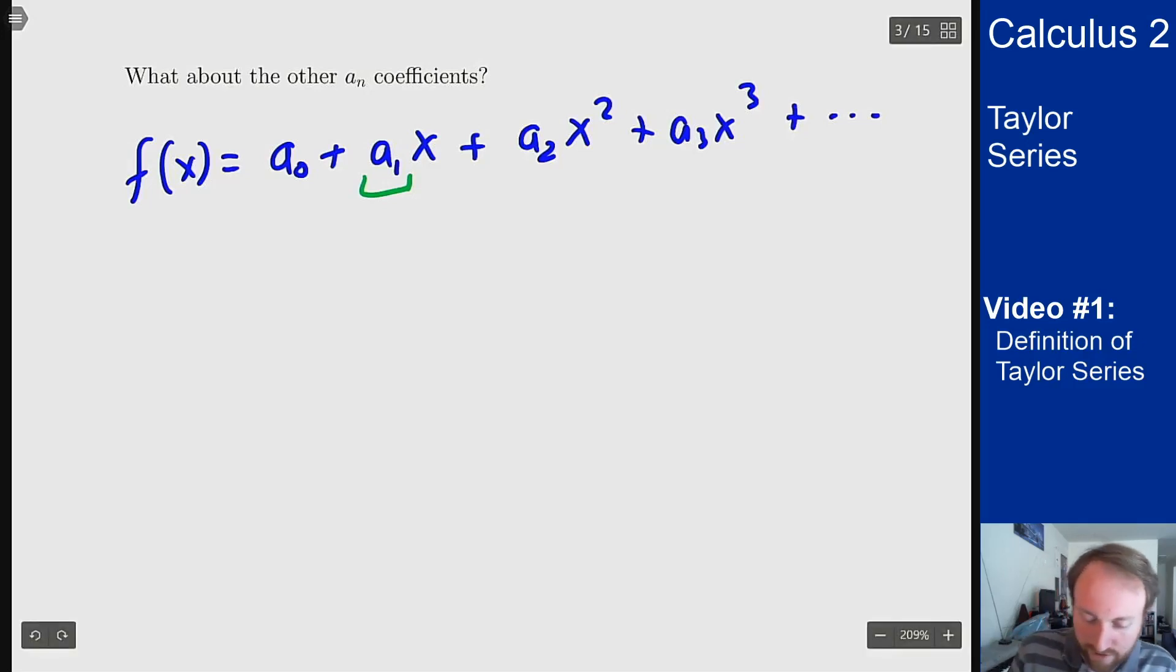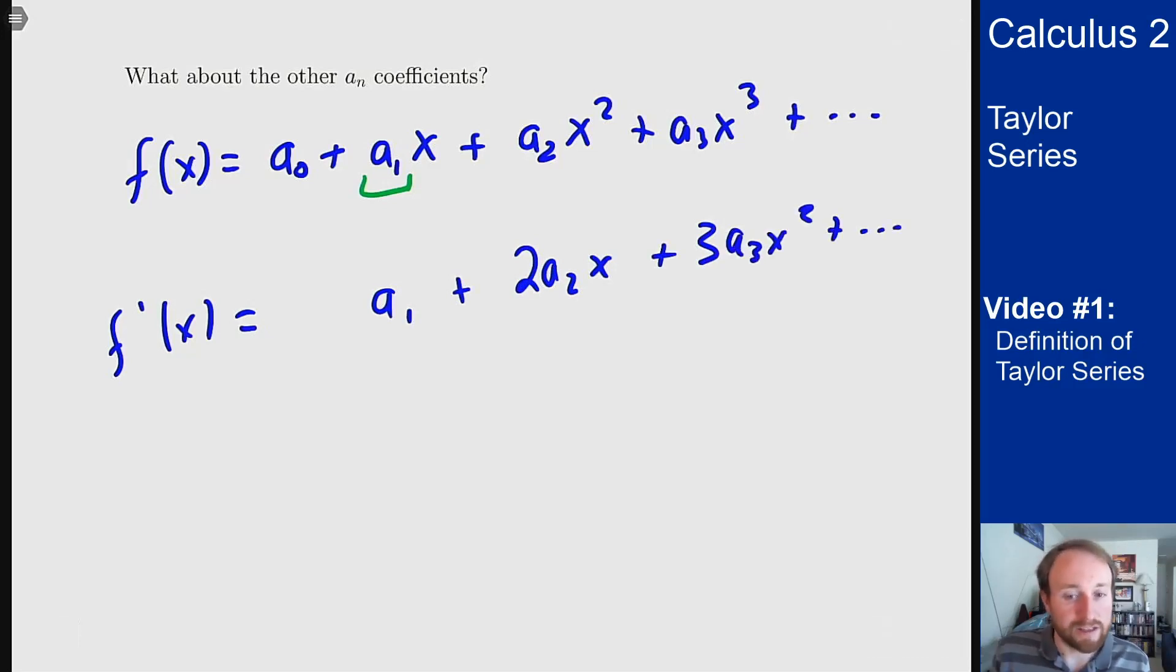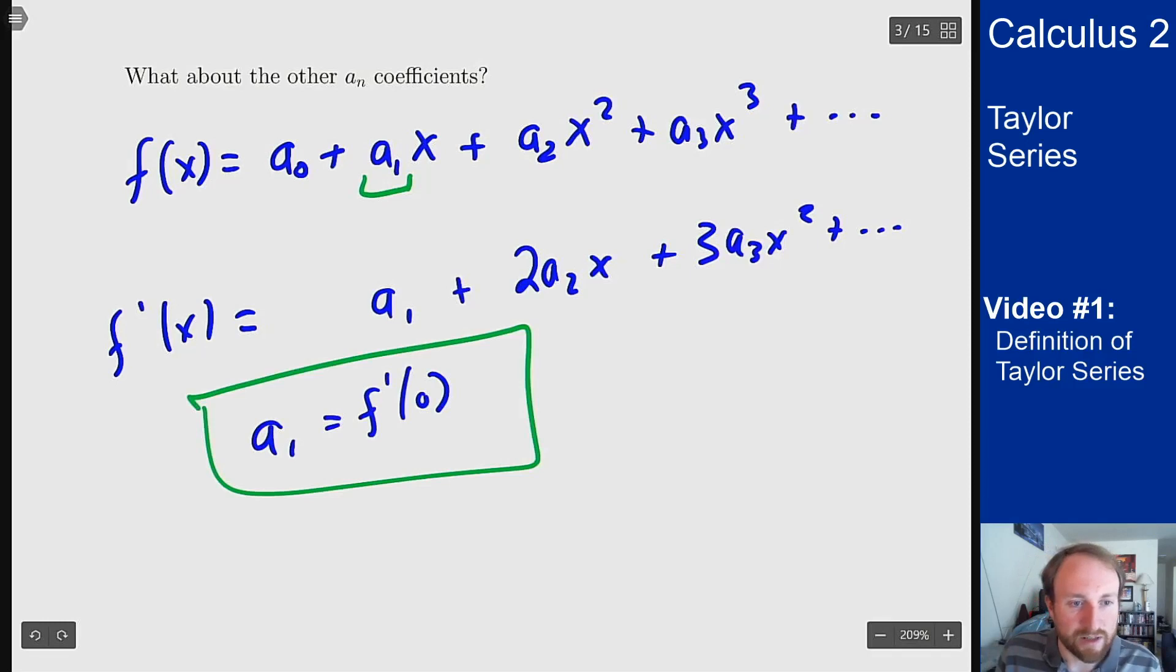But differentiate this function f prime of x will start with a_1 plus 2a_2 x plus 3a_3 x squared and so on, and if I plug in zero to this function I'll get a_1. So a_1 is f prime at zero and we can continue this process.